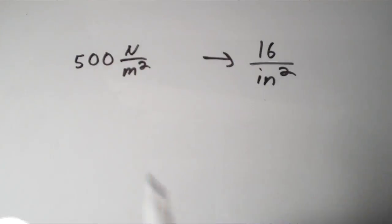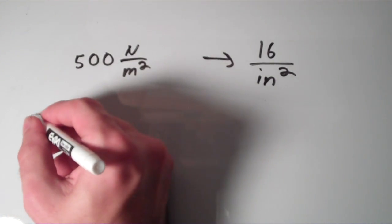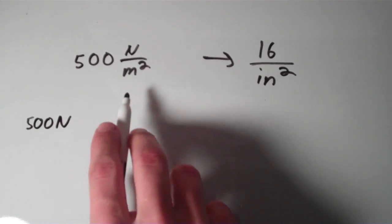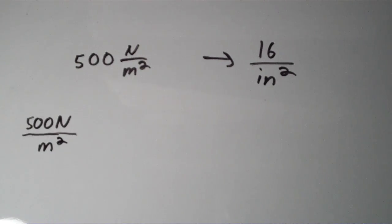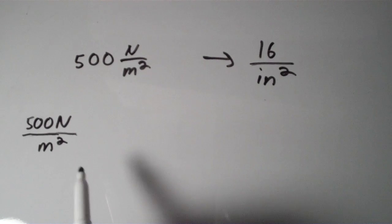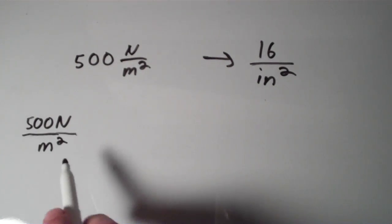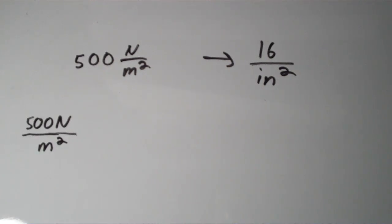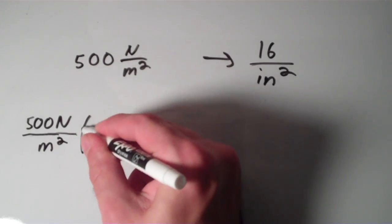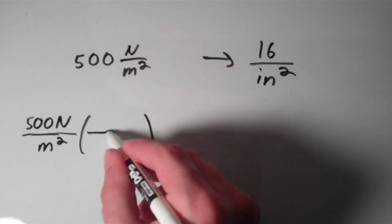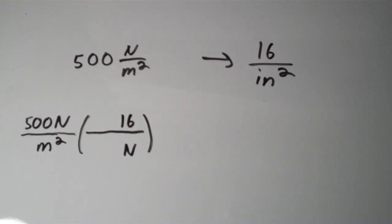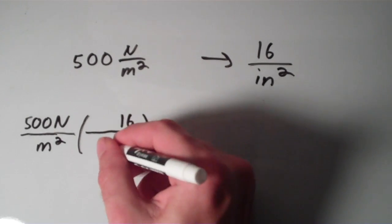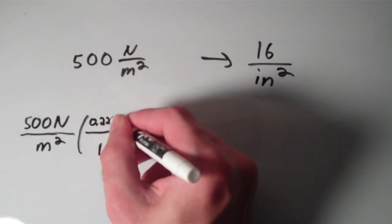We start out with 500 newtons per square meter. The square meters are on the bottom. We need to convert that into pounds per square inch. First I'll take care of the newtons — converting newtons into pounds, and later I'll convert the square meters into square inches. We're trying to convert away from newtons and toward pounds, so we put newtons on the bottom and pounds on top. The conversion from newtons to pounds is: 1 newton equals about 0.225 pounds.